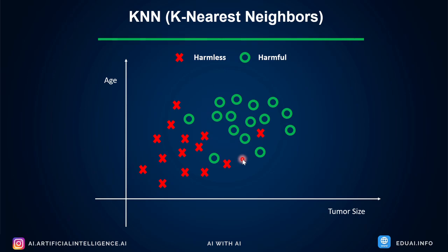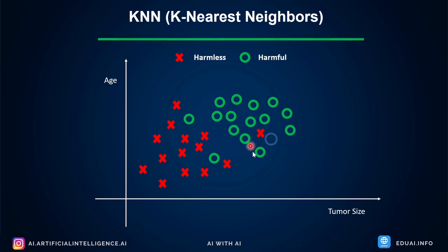If the data point falls somewhere else and K is only one, the new point might be considered harmless even if visually it is closer to harmful tumors. So we cannot give K too small a number, and we also cannot give it too large a number. We need to find the balance between underfitting and overfitting — we need to regularize it. So we need to find the best value of K.